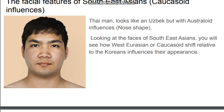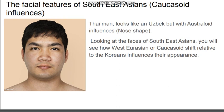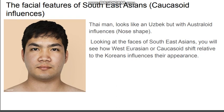Moving on to the facial features of Southeast Asians: this Thai man looks like an Uzbek with an Australoid influence, namely in the nose. Looking at the faces of Southeast Asians, you can see how the West Eurasian or Caucasoid shift relative to Koreans influences their appearance.